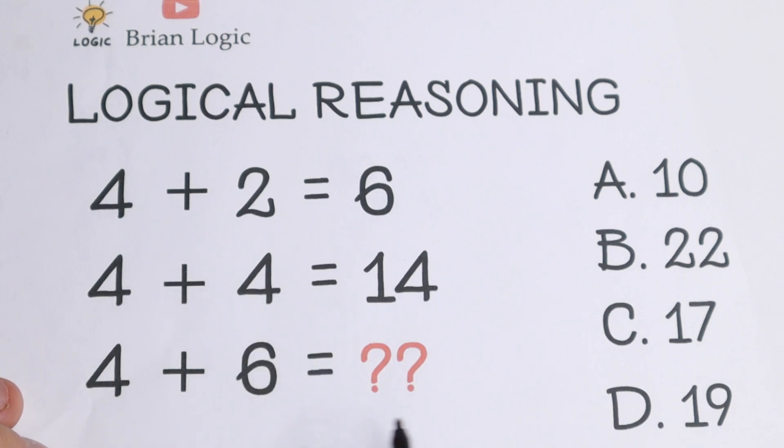So what's the pattern between all of these expressions? On the right hand side you have options A, B, C and D. So right now let's check your IQ. Choose one option and write it in a comment. What do you think this number will be? 10, 22, 17 or 19?